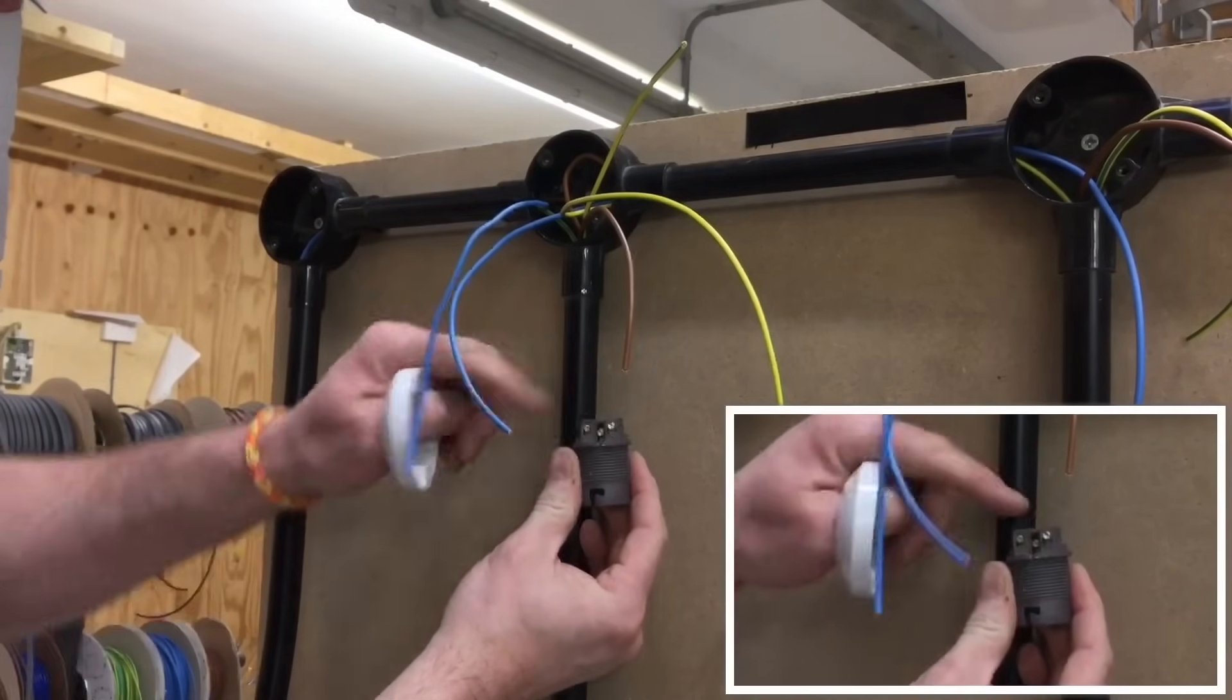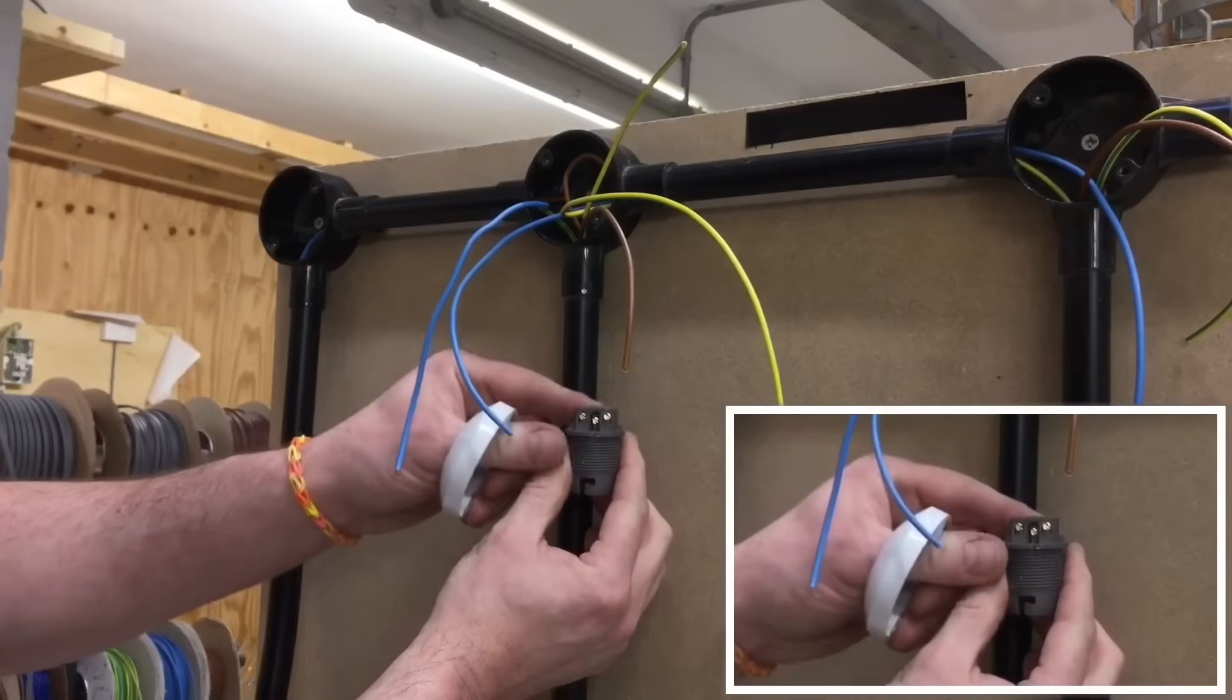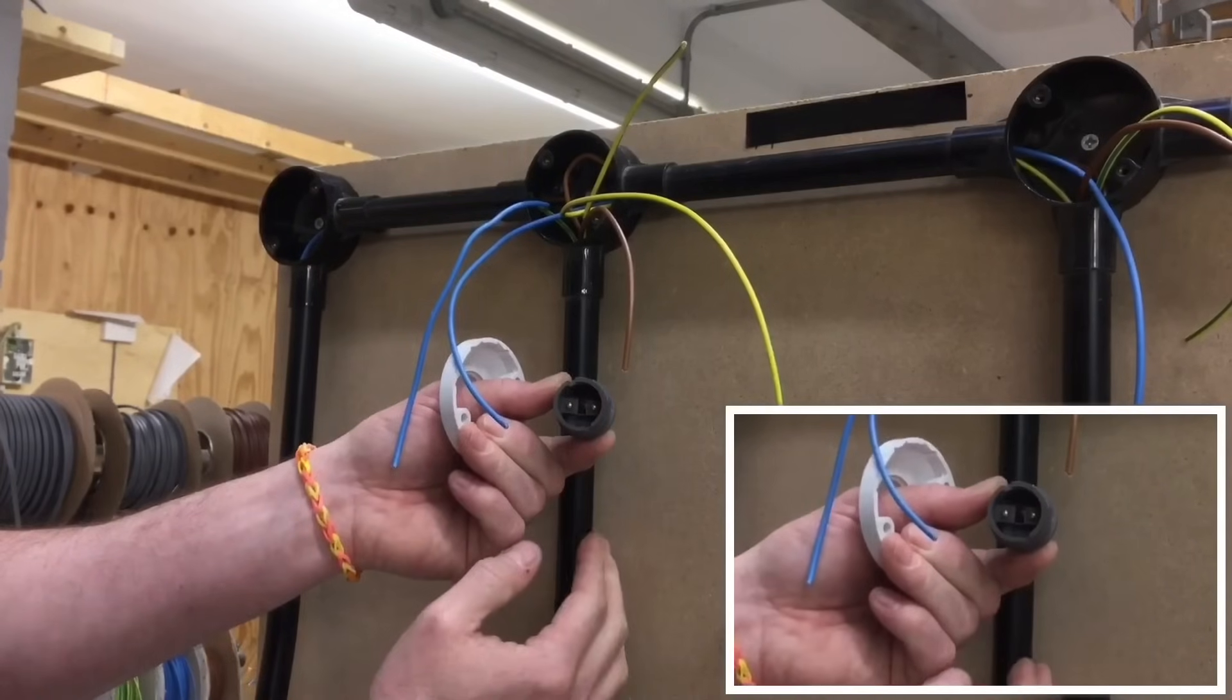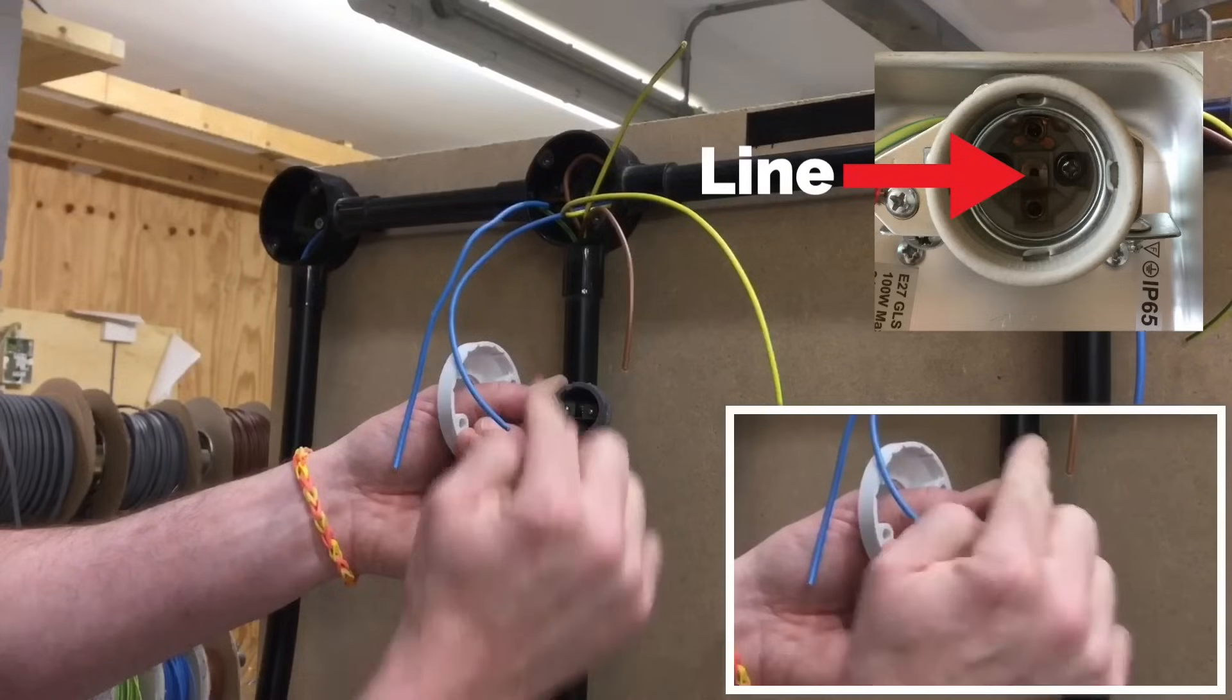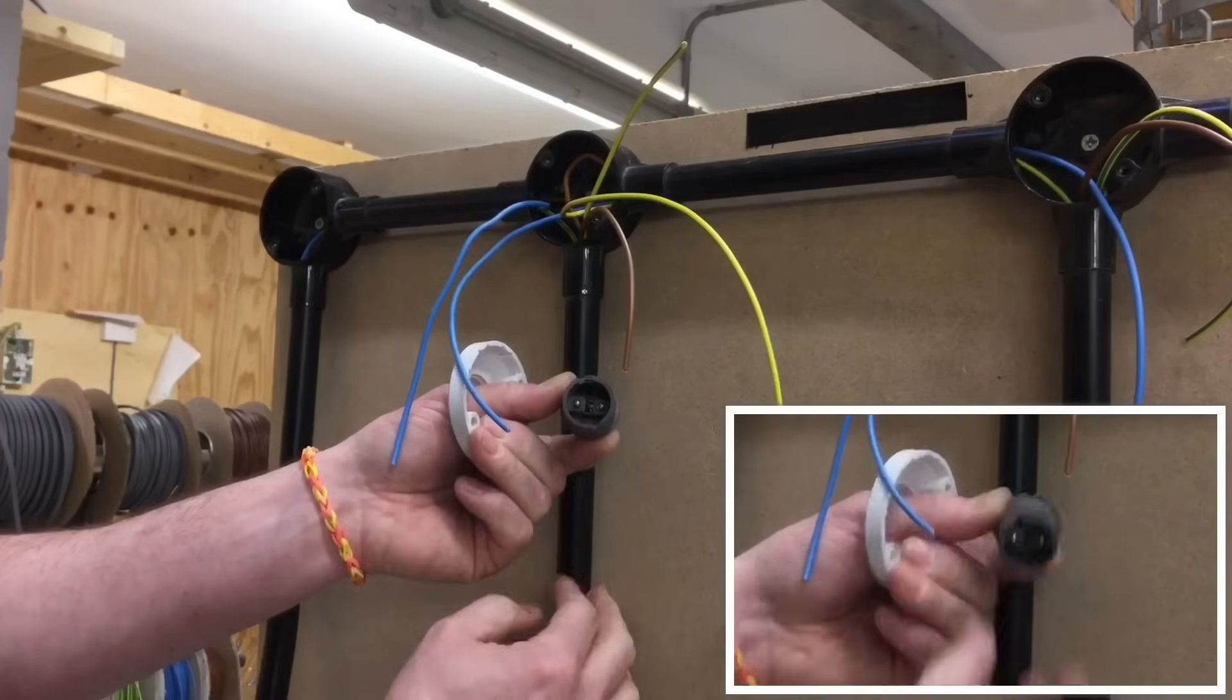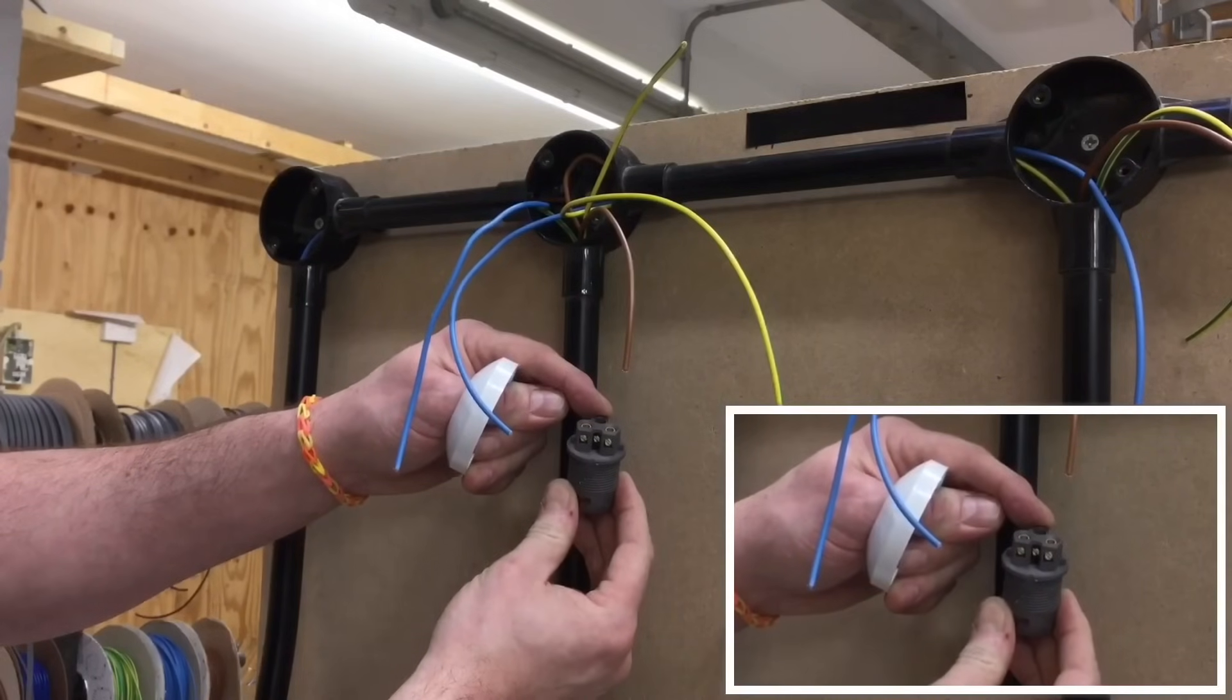This one here will be switching line or neutral. The reason being it's a bayonet cap lamp holder - the pins have no polarity, so it won't matter if I choose that one as the neutral and that one as the switching line or vice versa. The back section here is the connection for the circuit protective conductor. Be careful if you're using Edison screw style lamp holders that you actually polarize them - there'll be only one pin in the center which will be the line, and the screwed part will be the neutral. But we've got a bayonet cap one, so it doesn't matter which one's a switching line and which one's neutral.